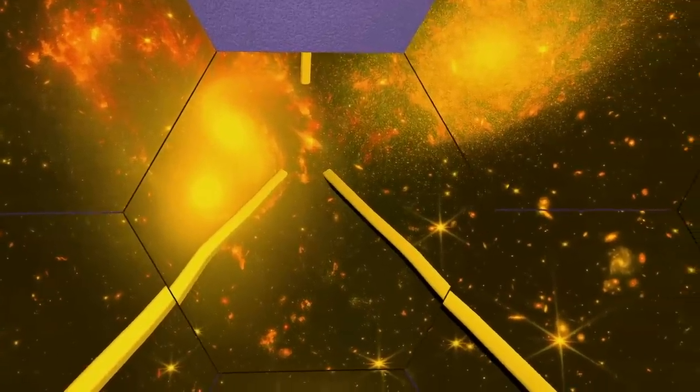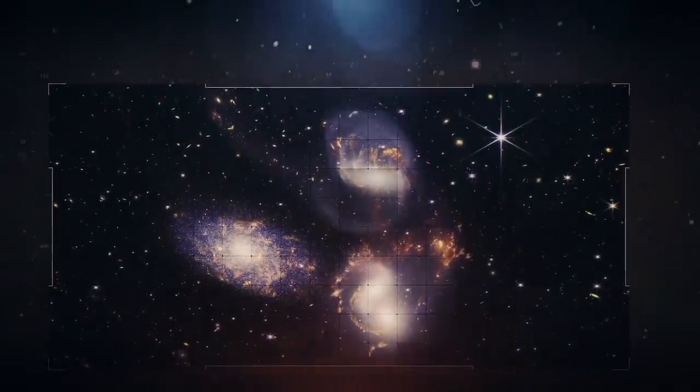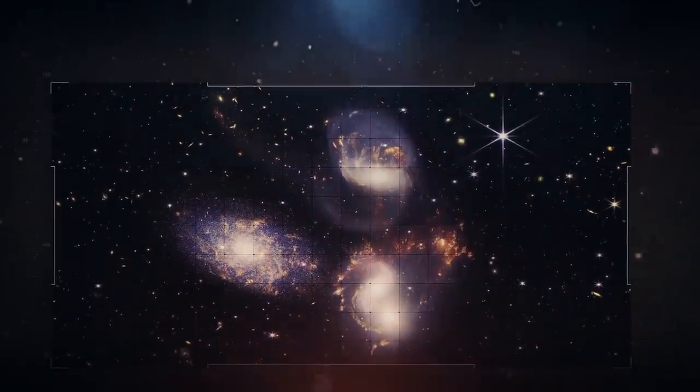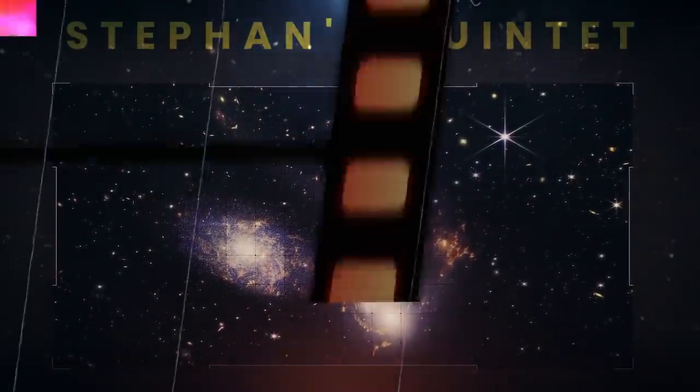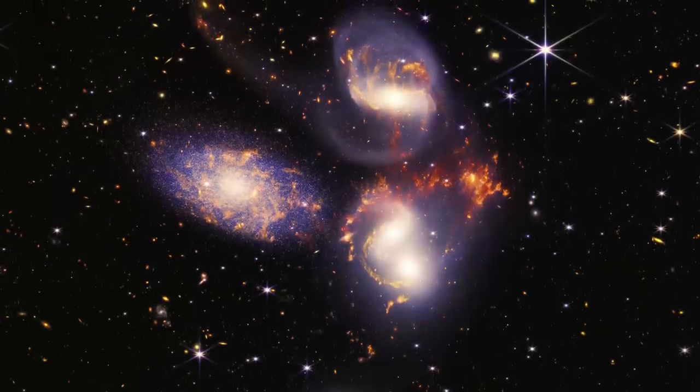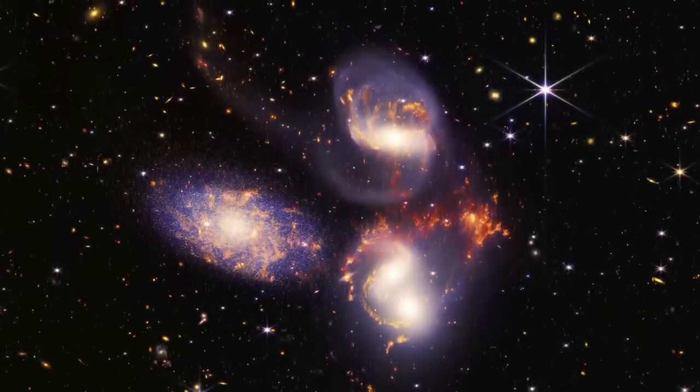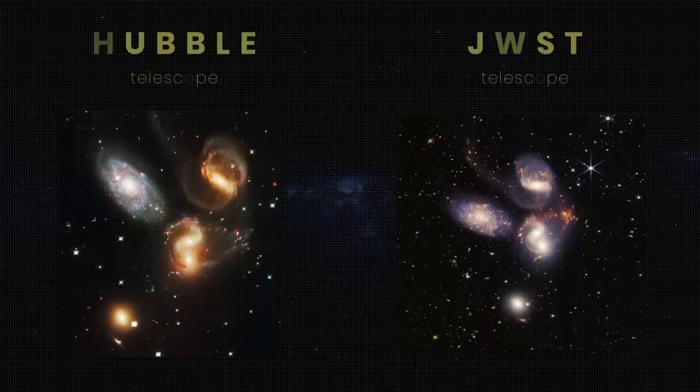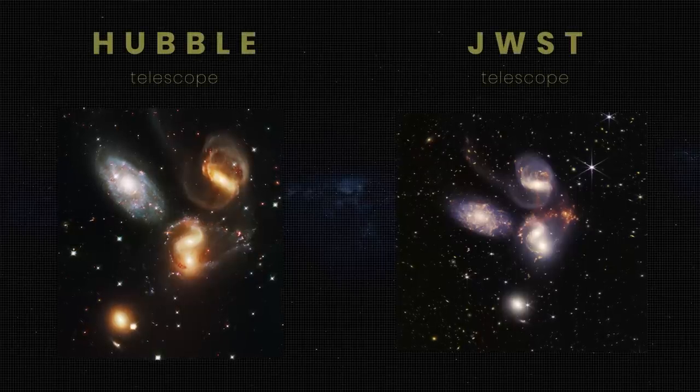The Webb telescope has been imaging closer galaxies as well. This is one of the first images released by NASA from Webb of Stephan's Quintet. In the image, five galaxies can be seen. Four of those galaxies are pulling and stretching each other apart in a cosmic gravitational dance. If you look at the same image from the Hubble telescope, you'll notice there are far less stars and galaxies visible compared to the JWST image.